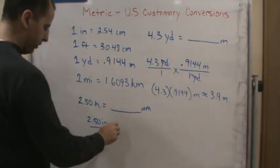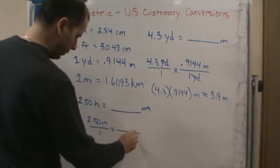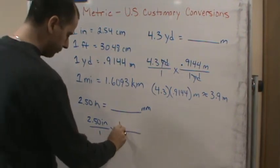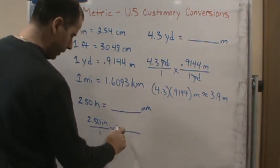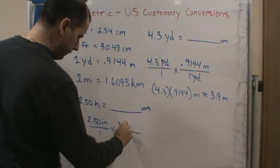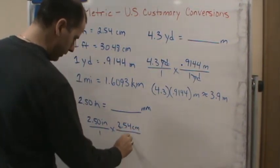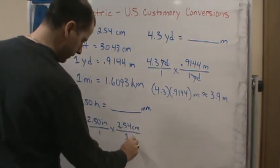We're going to use the unit ratio, which is going to be 2.54 centimeters for every 1 inch.